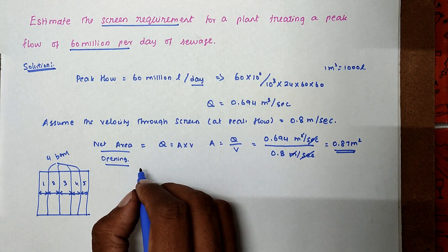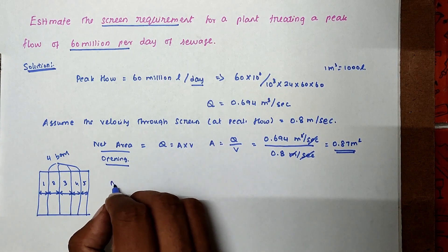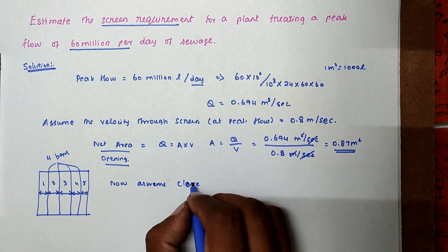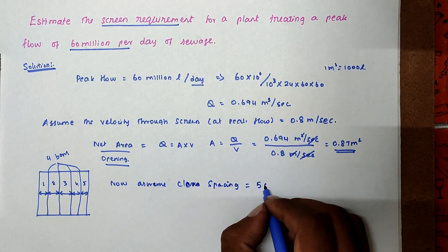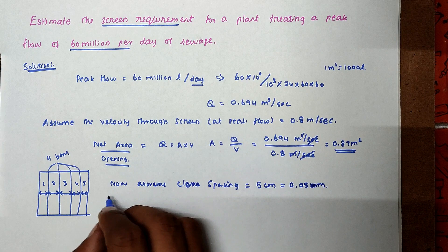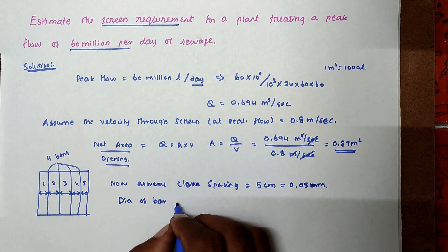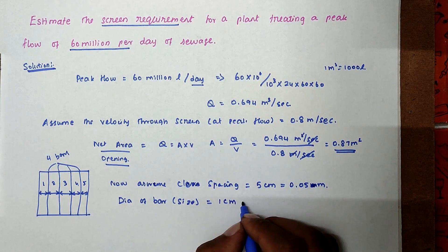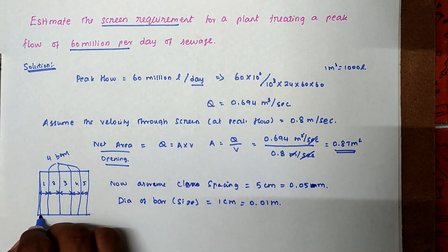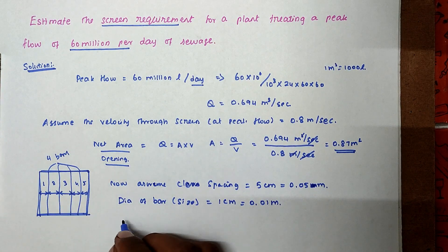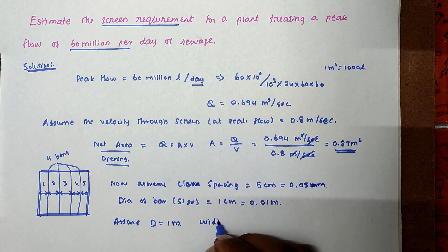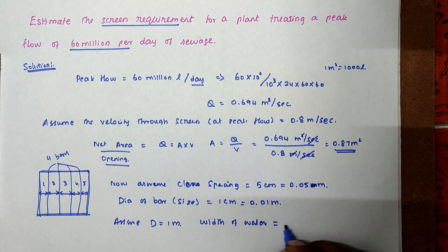We assume rectangular bars with clear spacing equal to 5 cm (0.05 m) and size of bar equal to 1 cm (0.01 m). We also assume depth equal to 1 meter and width of water equal to 1 meter.